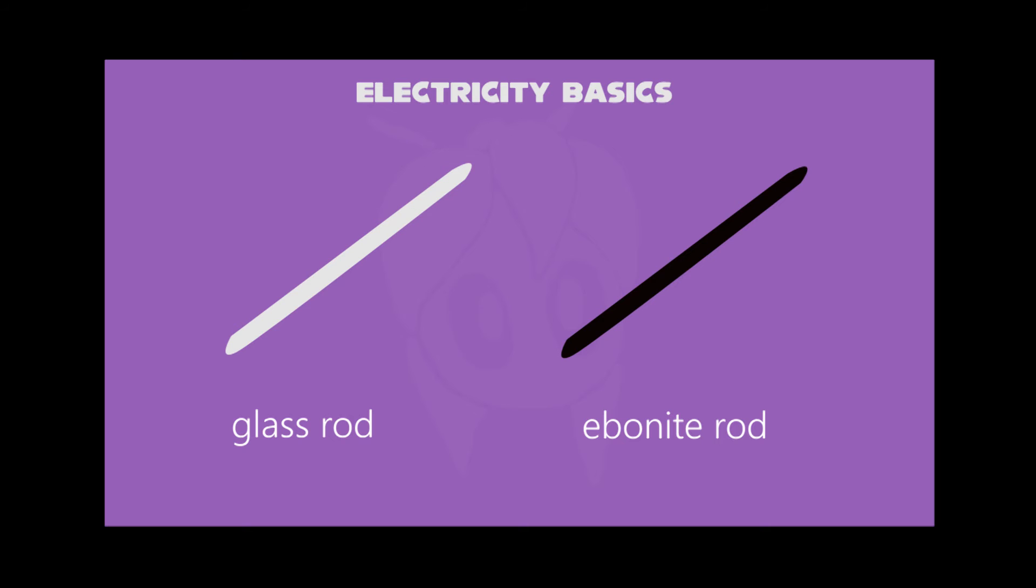You can use two rods like glass rod and ebonite rod for the demonstration. The glass rod is positively charged, whereas ebonite rod is negatively charged. The glass rod is light in color and the ebonite rod is black in color.